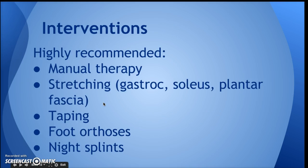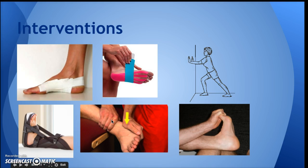Interventions: according to the clinical practice guideline, manual therapy, stretching of the triceps surae, taping, foot orthoses, and night splints are interventions that have the highest evidence. Taping is a cost-effective way to decide if a patient will benefit from orthoses, which are a more long-term and expensive way to support the arch of the foot. Stretching of both the gastrocnemius and plantar fascia is a great first intervention to give the patient on the first day of PT, to do in clinic and at home for relief of symptoms.